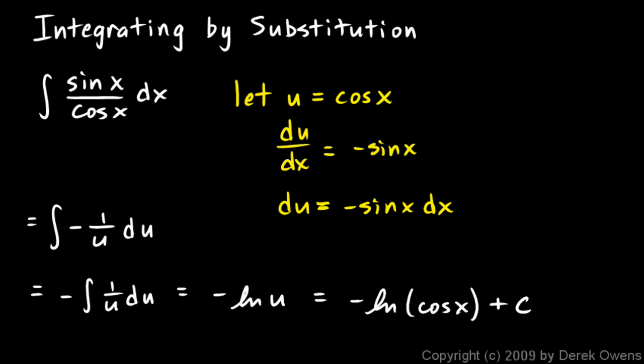This technique is sometimes called u-substitution because it's common to let the substitution variable be u. It could be any variable, but it's commonly called u-substitution for that reason. Also, you may have noticed that sine over cosine is tangent, so we just integrated the tangent function. The answer is negative natural log of cosine x — not something I would have guessed intuitively, but the proof is right here from the u-substitution.